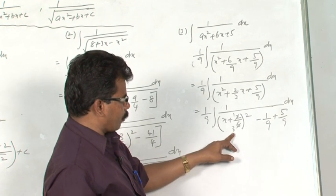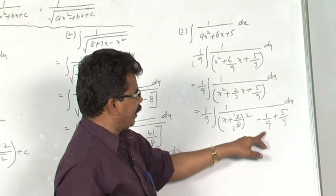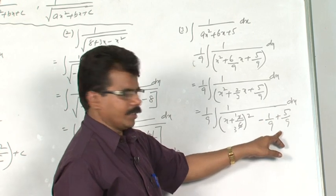Written as 1 by 9, you have to subtract the square of this, which is nothing but 1 by 9. This 5 by 9 I have written as it is.